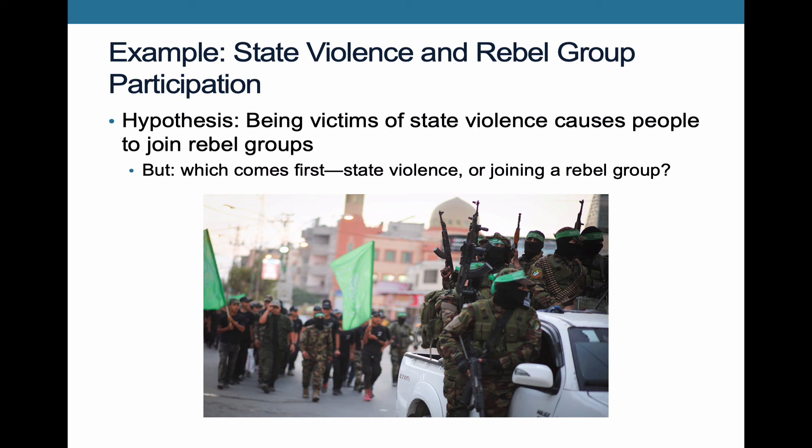So you wouldn't want to simply ask people in some sort of survey whether they've been victimized by the state and whether they are in a rebel group. You'd want to do a little more probing — asking if they've had experiences of state violence, when did that happen? And if they're part of a rebel group, at what age did they join? That way you can show that people had experienced the state violence first, and then later joined the rebel group.